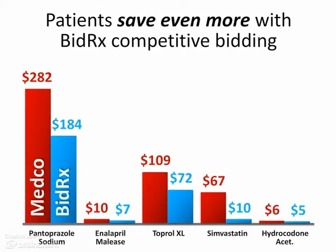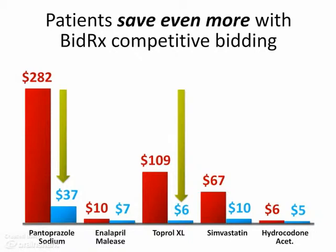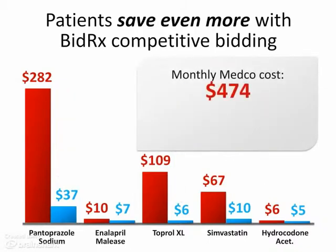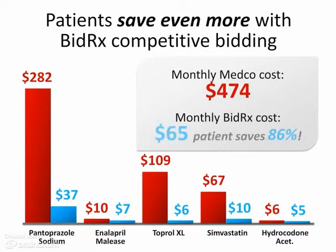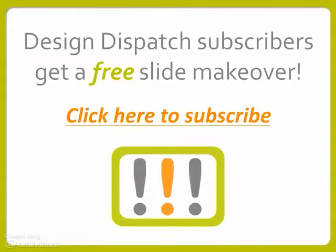The good news doesn't end there — we have the big payoff of the 86% possible savings. This is set up with the title 'Patients save even more with bidrx competitive bidding.' The animation shows two drug prices dropping dramatically, and rather than letting the audience draw their own conclusions, we tell them: the monthly Medco cost is $474, the monthly bidrx cost is $65, big swoosh circle — patient saves 86%. That is the most important takeaway from this slide.